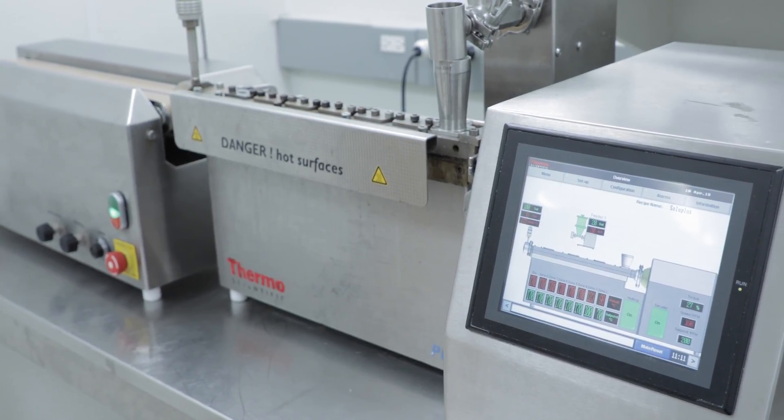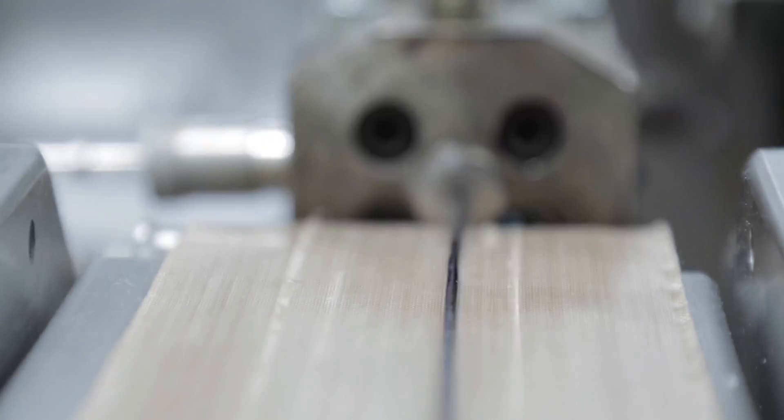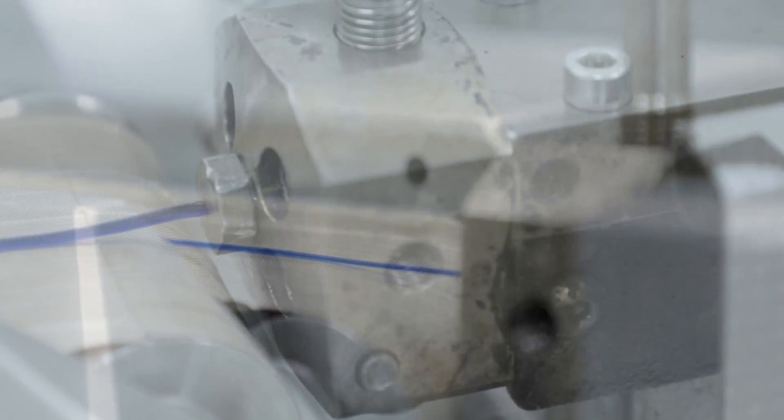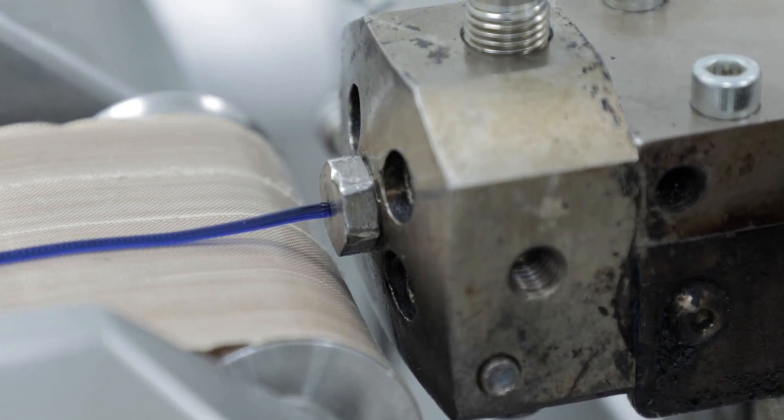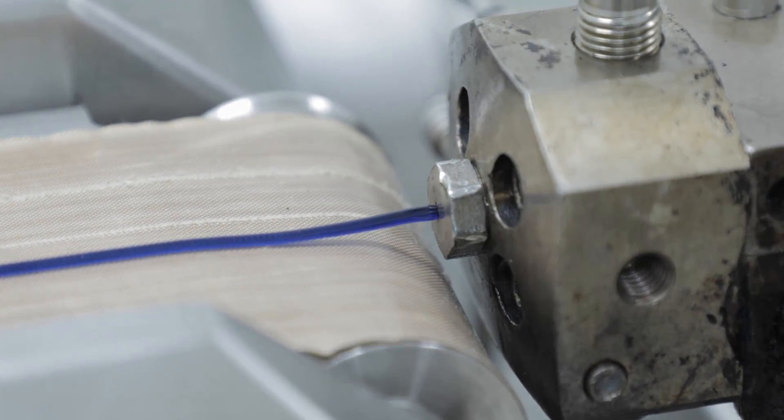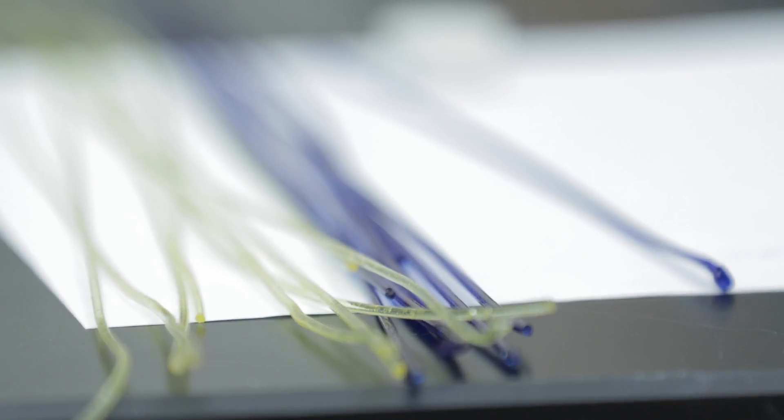By using a melt extruder, we can make formulations using different drugs and different polymers. When we extrude them through a melt extruder, we get the filaments. Then we clean the filaments.